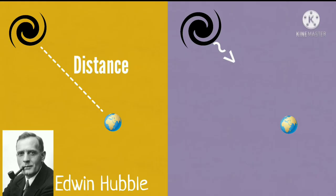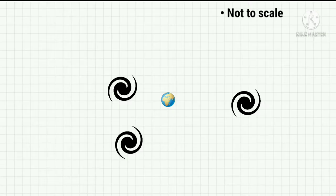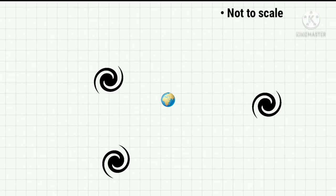Later, observations by Edwin Hubble of the distances to different galaxies, and observations by Vesto Slipher of the redshift of these galaxies, allowed Edwin Hubble to discover that nearly all other galaxies are moving away from us. And the further away a galaxy is, the faster it is moving away from us. The universe is expanding.